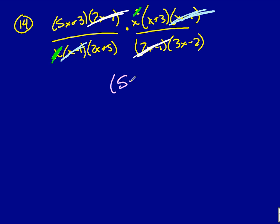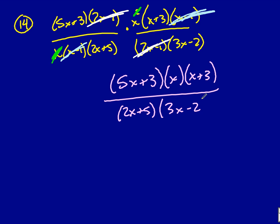What I have left on top is 5x plus 3. I have an x, and I have an x plus 3. On the bottom, I have a 2x plus 5, and I have a 3x minus 2. So, that again is my simplified answer.